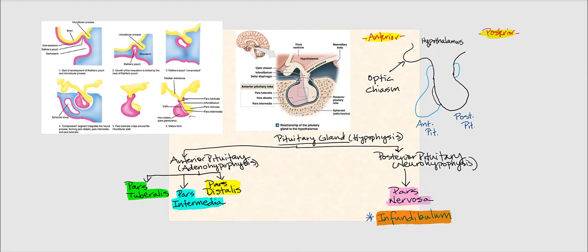The pituitary gland is also referred to as the hypophysis. It has two lobes: the anterior pituitary, or anterior lobe, referred to as the adenohypophysis, and the posterior pituitary, also called the posterior lobe, referred to as the neurohypophysis.